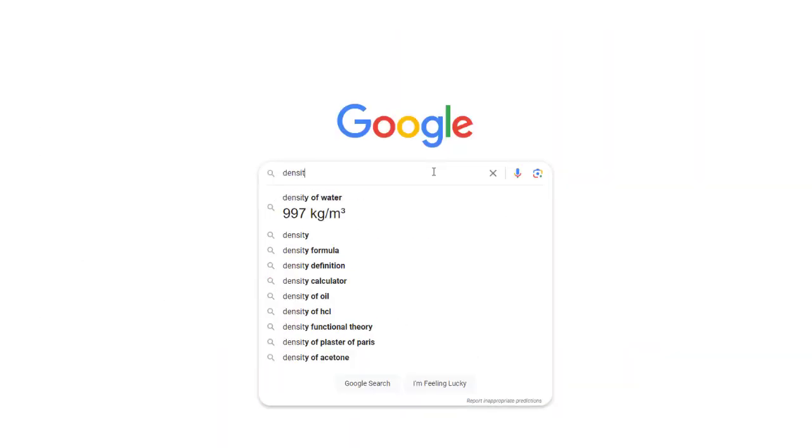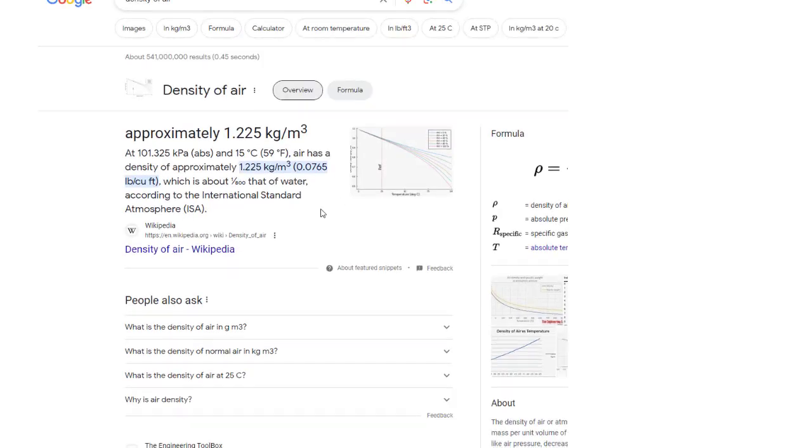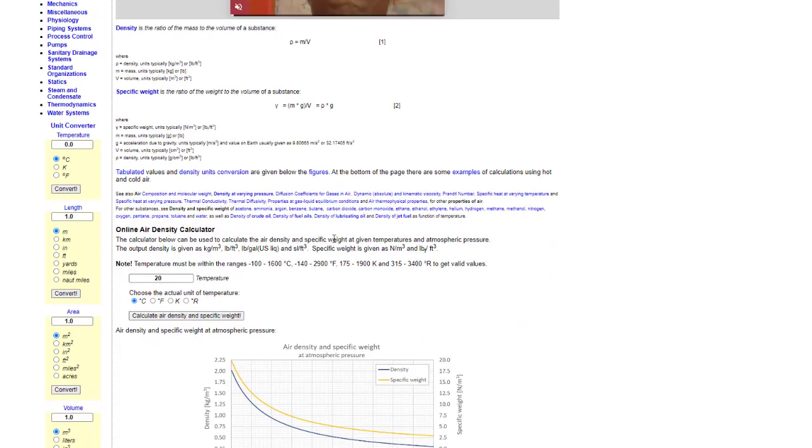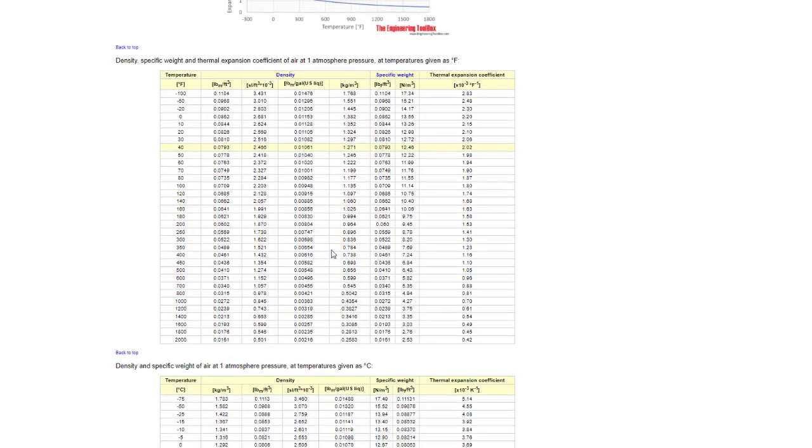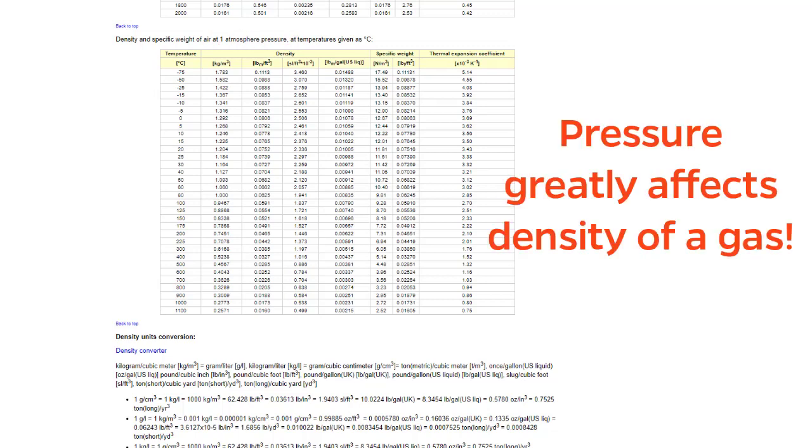For example, let's say that you wanted the density of air at 60 Celsius and 1000 mmHg. If you type density of air into a Google search box, you might find a table on a website called Engineering Toolbox that seems pretty good. However, if you read the table caption, you'll see that this table is only valid at 1 atmosphere, not 1000 mmHg. Pressure greatly affects the density of a gas, as we will discuss later in this course.